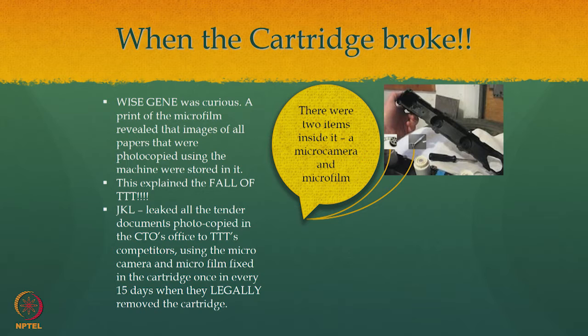She is very wise, my heroine. So she immediately was able to relate the entire thing. What had happened was every 15 days the JKL fellow took the cartridge out, took the micro film from the micro camera, and made a print of what was on the film. So every paper that was photocopied in the last 15 days was stored as an image in the micro camera, and when the micro camera was taken out and they made a printout, all the documents were printed.